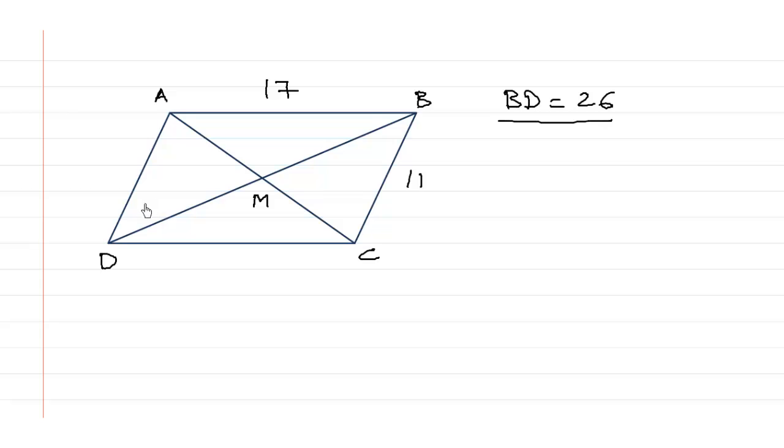So we use the property of parallelogram and that is the diagonals, AC and BD, they bisect each other, which means that point M is the midpoint of both the diagonals. So if BD is 26, we can say that BM is half of 26, which is 13 and DM is also half of 26, which is 13.